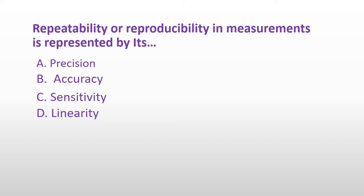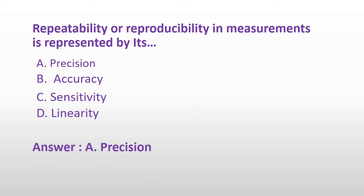Repeatability or reproducibility in measurements is represented by its: Option A: Precision. Option B: Accuracy. Option C: Sensitivity. Or Option D: Linearity. And the answer is Option A: Precision.